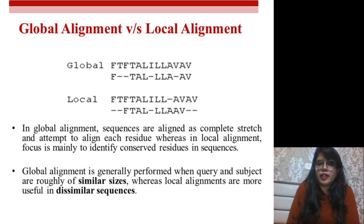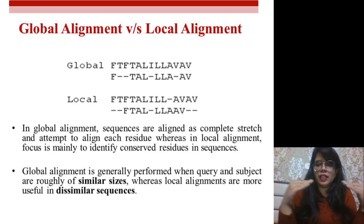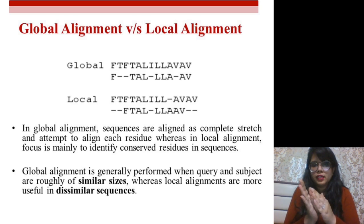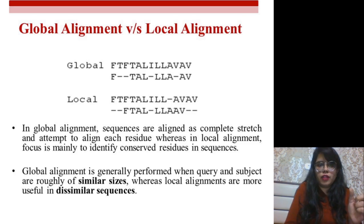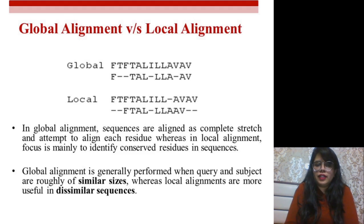Global alignment is when we align a sequence from the first residue to the last residue. It is used for sequences that are nearly equal in size. In local alignment, we search for locally conserved areas — for example, if you have a one kilobase sequence and want to know if a hundred base pairs within it are identical to another hundred base pairs elsewhere, identifying that conserved region. Local alignment is mainly focused on identifying conserved residues and is usually performed for dissimilar length sequences.